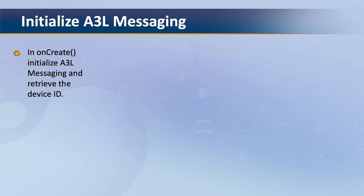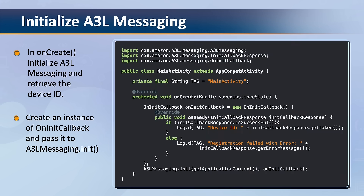And finally, in the onCreate method you must initialize A3L messaging and retrieve the device ID. This is important as to test sending a notification you need the device ID of the device where you installed your app. To initialize, create an instance of the abstract class onInitCallback and pass it to the A3L messaging .init method as seen in the following example. I recommend pausing the video here to have a closer look at the code.